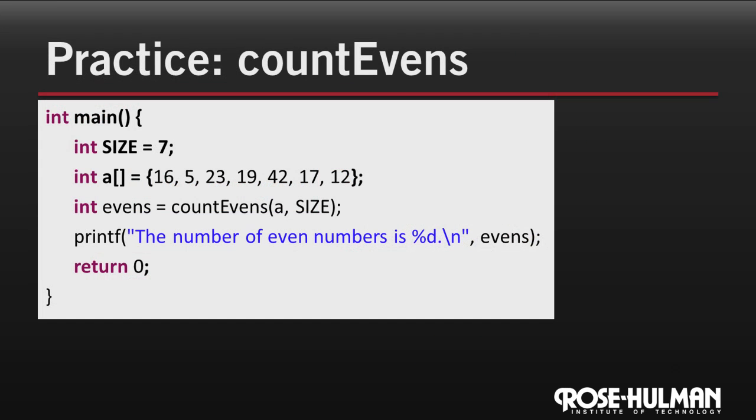So let's do a practice exercise now. Here's the main function of a C program. We initialize the size variable to store seven, and then we declare an array A that contains seven different numbers. Then we call the count evens function. And because arrays don't store their own size, we have to pass the array A and its size separately so that the function knows how long that array will be. Finally, we print out the number of even numbers found in that array.